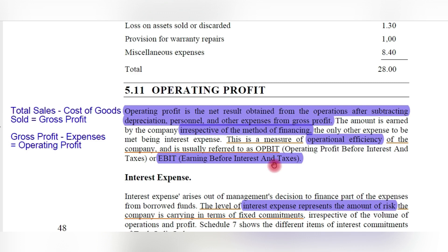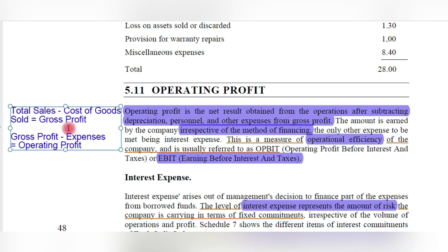Operating profit is usually referred to as EBIT — Earnings Before Interest and Taxes. Gross profit is also known as EBITDA — Earnings Before Interest, Tax, Depreciation, and Amortization. To summarize: total sales minus cost of goods sold equals gross profit; from gross profit, if operating expenses are removed, that becomes operating profit; if depreciation is not included in those deductions, it becomes EBITDA.